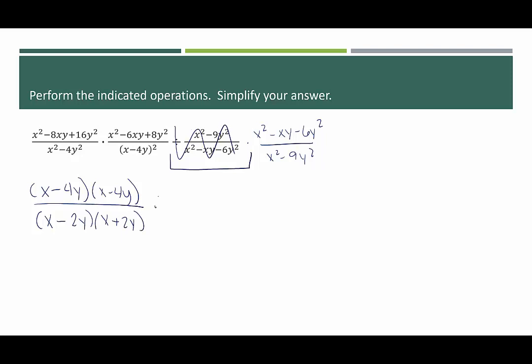In the middle we have x squared minus 6xy plus 8y squared. That has a target product of 8 and target sum of negative 6, giving x minus 4y times x minus 2y. And then in the denominator we have x minus 4y quantity squared.